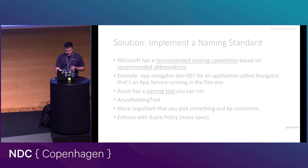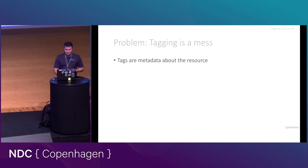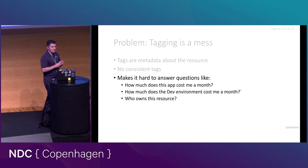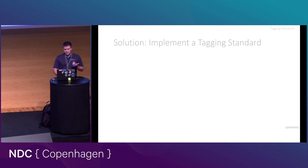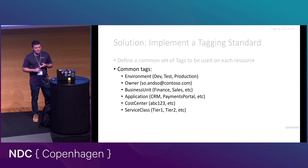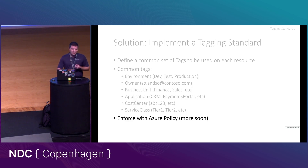The next thing we're going to talk about is tagging standards. Tags are metadata about a resource, and a lot of companies don't have consistent tags, which makes it really hard to answer questions like: how much does my production environment cost per month, how much does this application cost per month, or who owns this resource? Tags help solve that problem. Some common tags you might have are things like environment, owner, and business unit. Just pick whatever standard makes sense for you, and you can enforce this with Azure Policy.